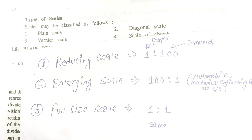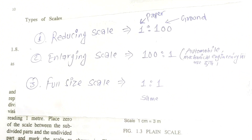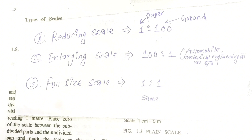The three scale types used in engineering drawing are: reducing scale, enlarging scale, and full size scale. For a reducing scale, for example 1 to 100 — 100 meters on the ground equals 1mm on paper. For an enlarging scale, the ratio is 100 to 1, meaning we can see a larger size. The full size scale is 1 to 1 — the ground measurement and the paper measurement are the same.